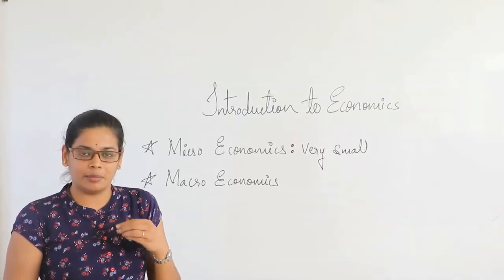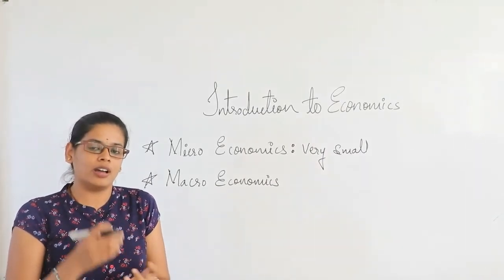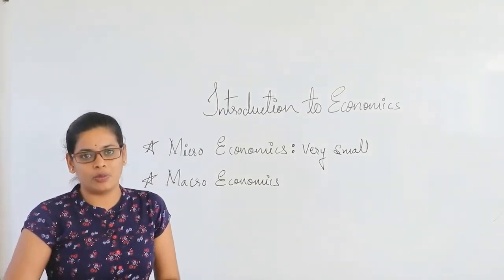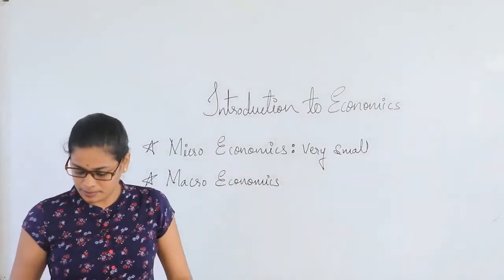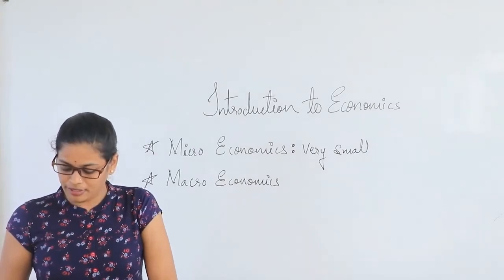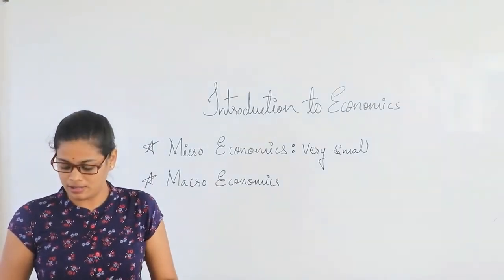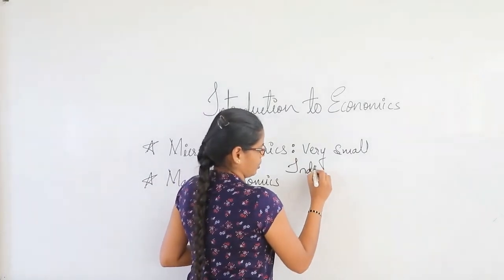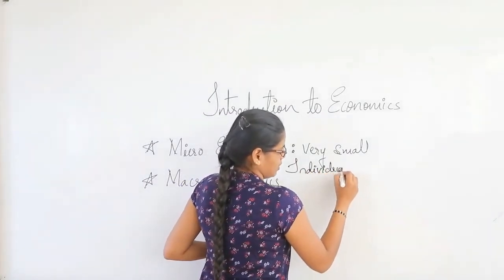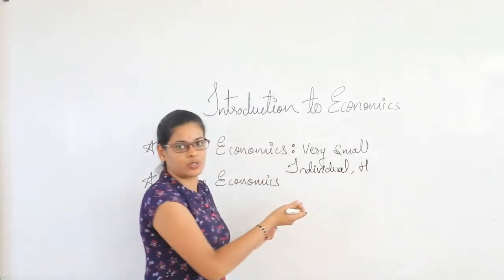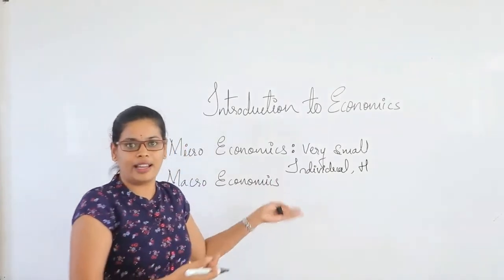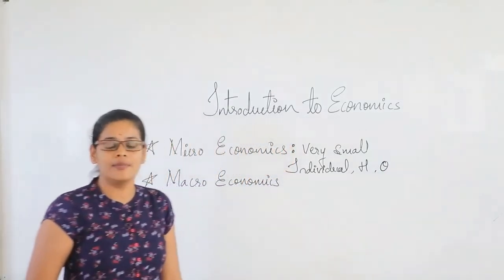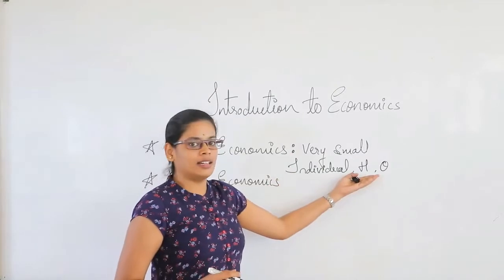When we talk about me as an individual, we are talking about what are my resources and how I am going to utilize my resources to satisfy my unlimited wants — that comes under microeconomics. The smallest components given are: individual, households, and organization. Individuals come under microeconomics. Next we have households, which is derived from the Greek word 'okios'. And next we have organization, also called a firm. These are all considered under microeconomics.